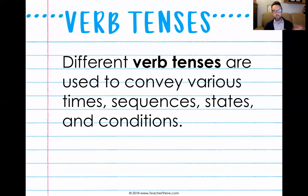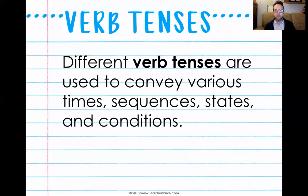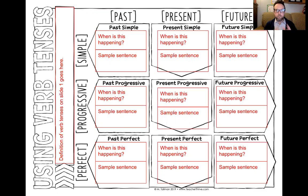Verb tenses show different times — so past, present, and future. Sequences, like when things are happening and the order things are happening. States — that's like that state of being; remember the verb forms of 'be.' And then also conditions along with that. So for our sketch notes, in this first video, we're going to be looking at simple tenses.